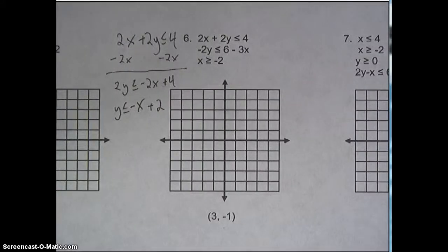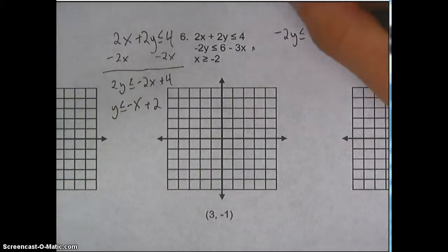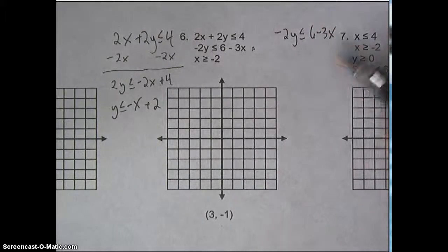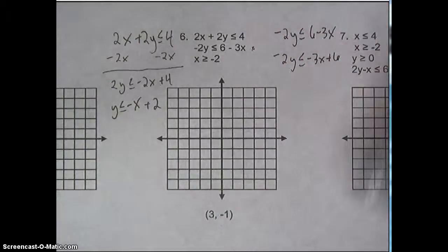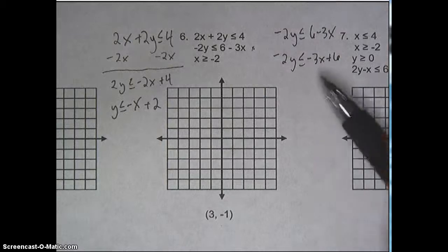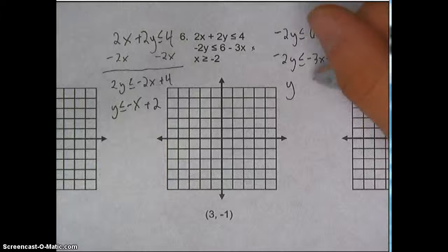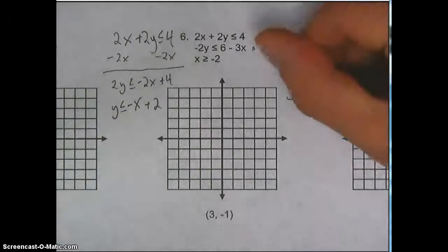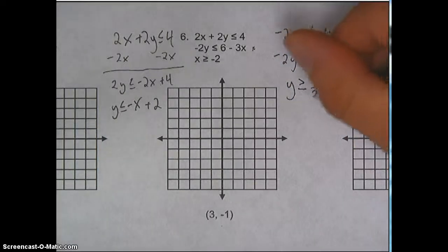I didn't flip the sign because I only divided by a positive number. For equation two: negative 2y is less than or equal to 6 minus 3x. I'll rearrange terms to put x first: negative 3x plus 6. Then divide everything by negative 2 — and when I divide by a negative, I flip the sign. That gives me y is greater than or equal to 3/2x minus 3.